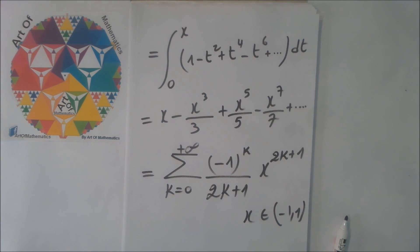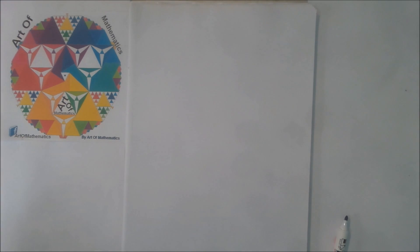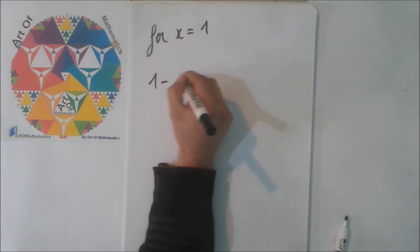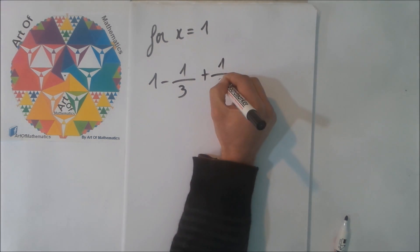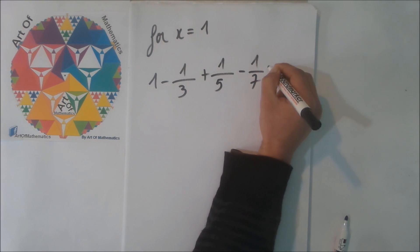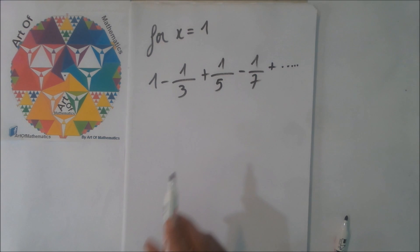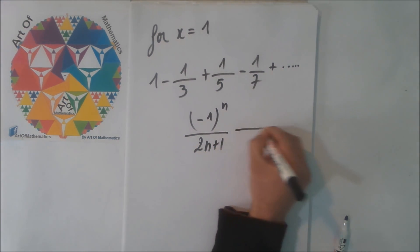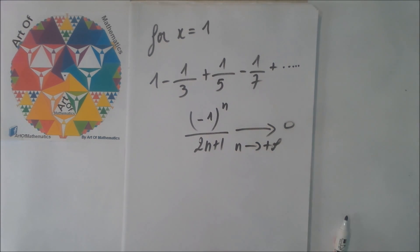Now we must check the endpoints separately for convergence. We are interested in the convergence at x equal to 1. So for x equal to 1, we have this series: 1 minus 1 divided by 3 plus 1 divided by 5, and so on, which is an alternating series with decreasing terms. The terms minus 1 divided by 2m plus 1 tends to 0 when n tends to plus infinity, so this series converged.